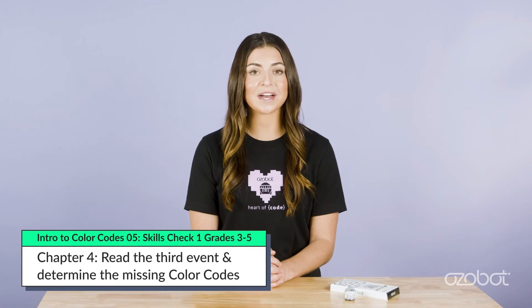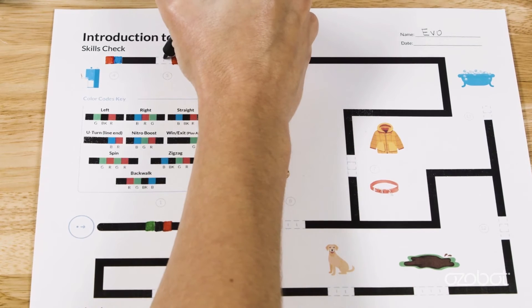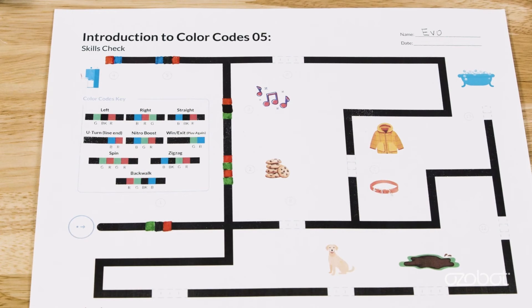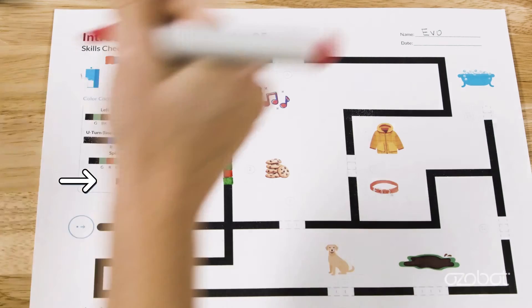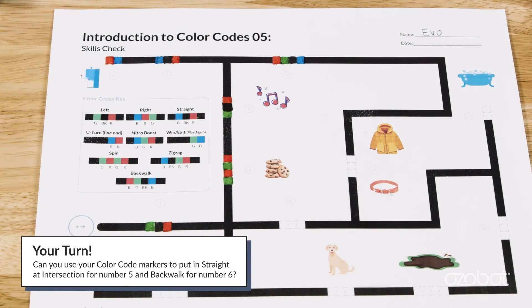On activity sheet one, the third event says: Then Ozobot heard its favorite song playing in the living room. It couldn't help but dance and started to backwalk. On activity sheet two, find the speaker in the maze. What direction does Ozobot need to move at the intersection to get to the speaker? Ozobot needs to go straight, so use the straight at intersection color code. The sixth missing color code has four colors, so it is a special move. Ozobot danced by doing a backwalk. Use your color code markers to put in straight at intersection for number five and backwalk for number six.